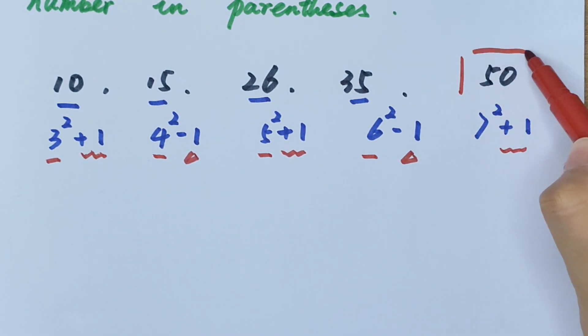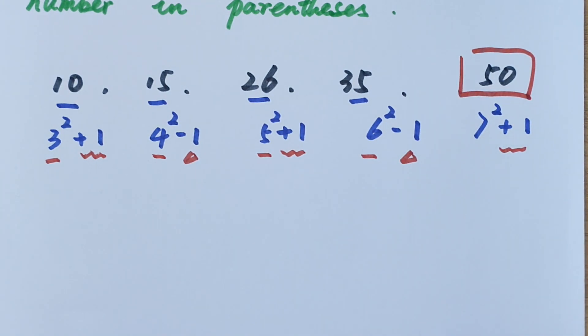So 7 squared plus 1 equals 50. So this is the final answer. Thank you for watching and see you in the next video. Bye-bye.